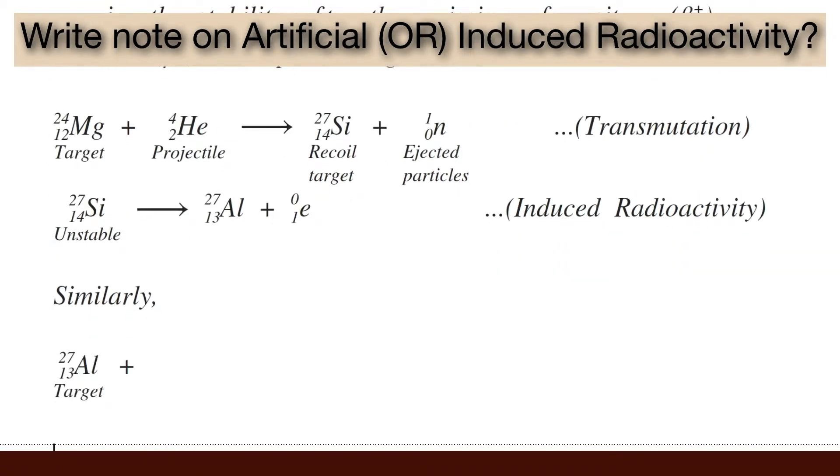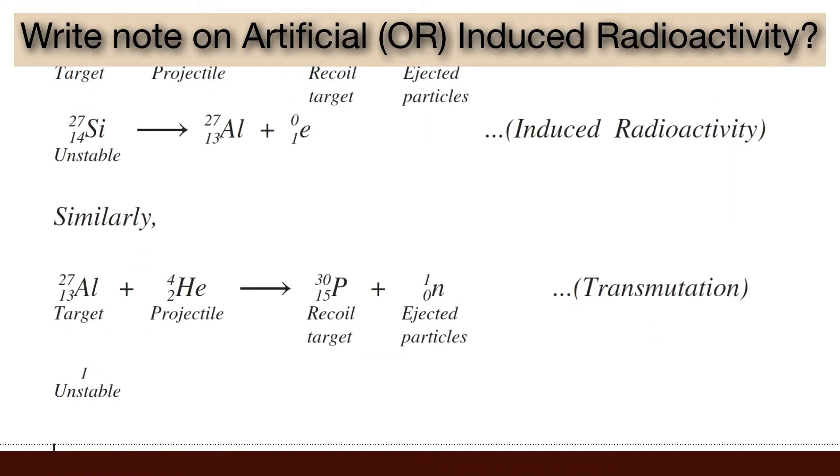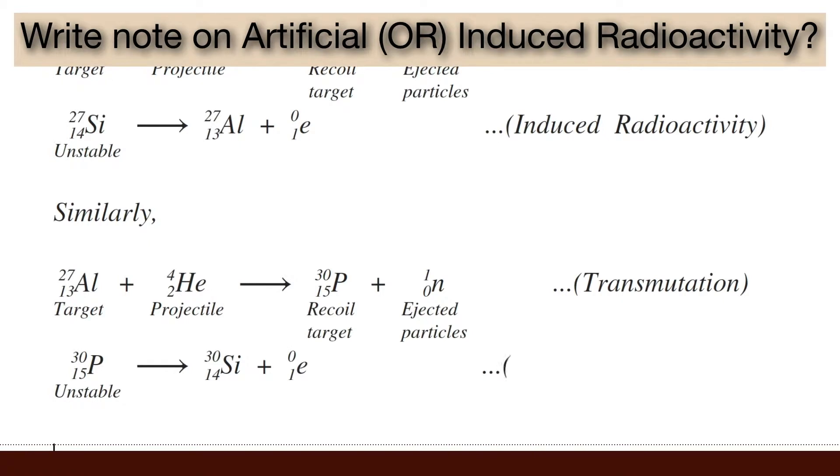Similarly, when aluminium-27 is bombarded with helium, it produces phosphorous-30, which is again unstable and emits one positron producing silicon-30.